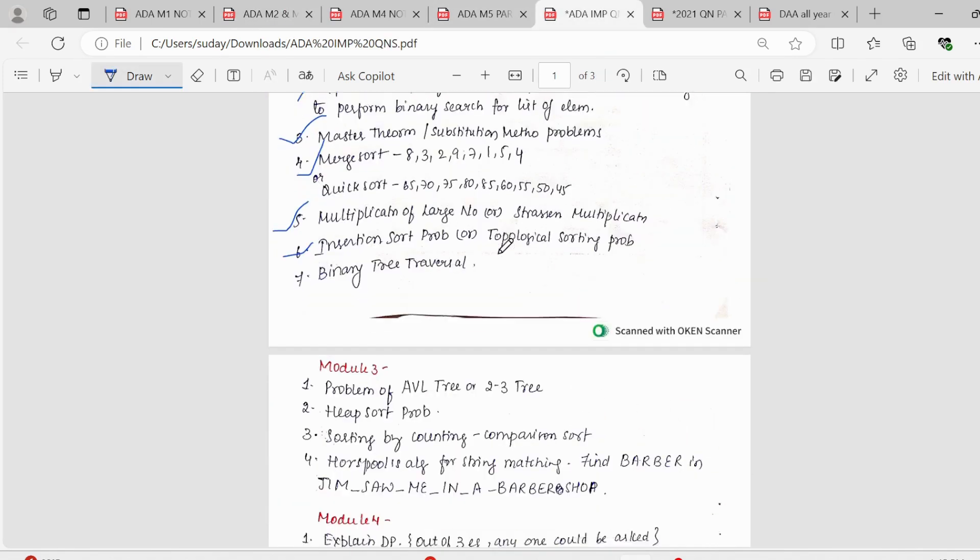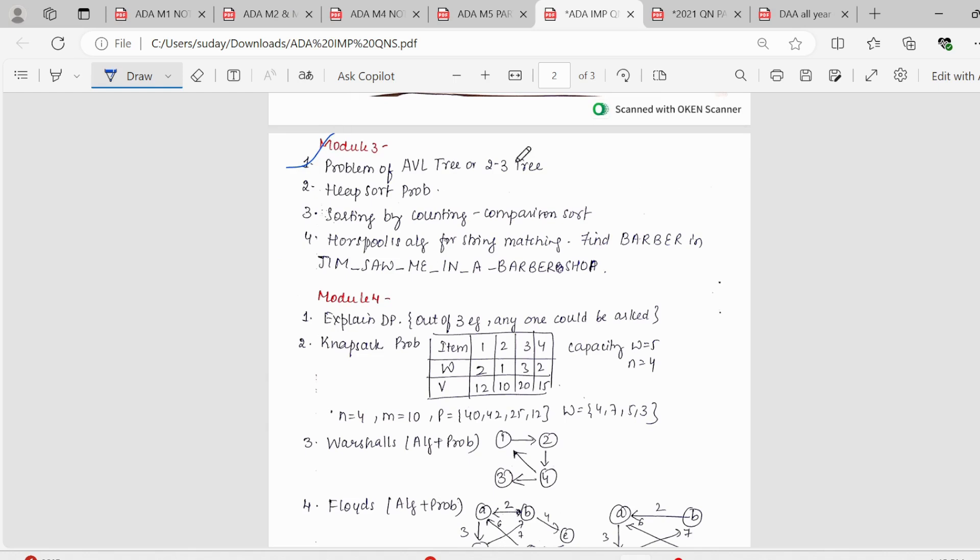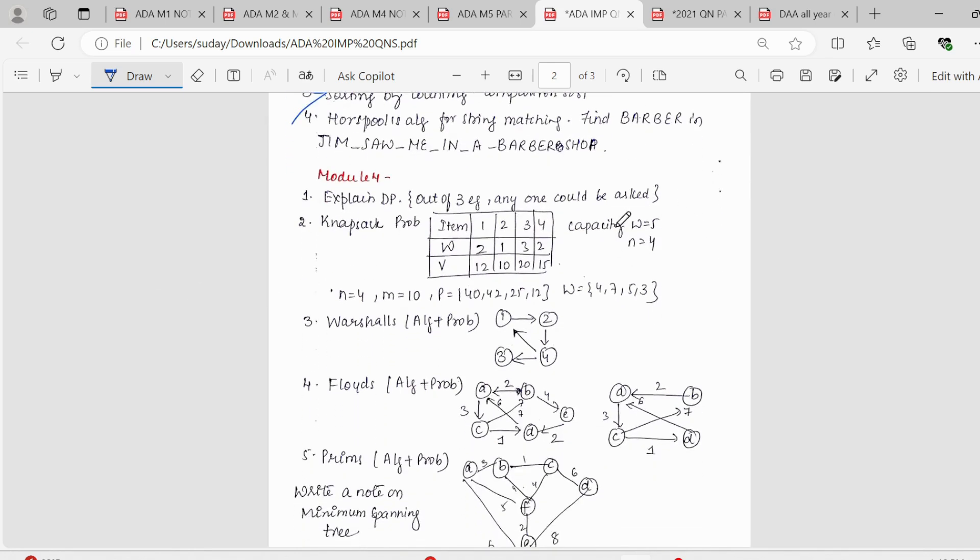Next, moving on further, coming to the third module, we have problems on AVL tree and 2-3-tree. So again, this is a new topic. They can ask what are AVL trees, what is 2-3-tree, explain it with an example. Next, coming to the second problem, that is the heap sort problem. So heap sort problem, there are two steps here - first step is creation of heap and then deletion of the elements from the heap. Then we have sorting by counting. Sorting by counting was asked in the last time paper. Then we have the Horspool algorithm for string matching. So this question was asked in the last time paper.